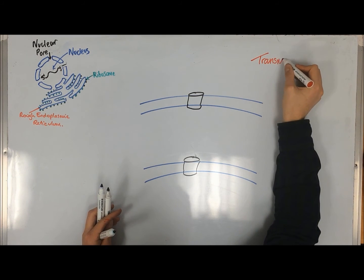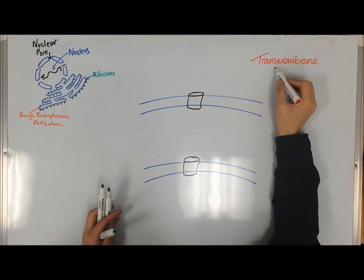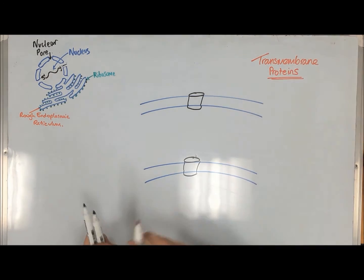The other type of protein synthesized by membrane-bound ribosomes are the transmembrane proteins. These proteins remain embedded in the membrane.